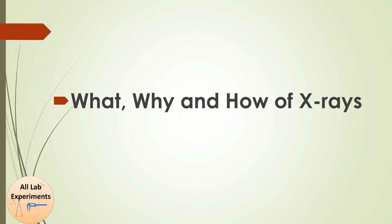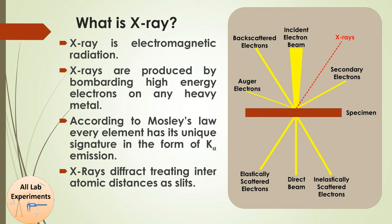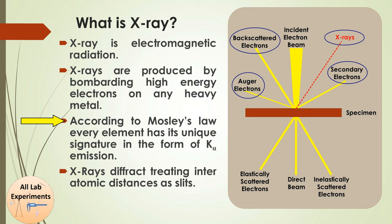Here we start with the what, why, and how of X-rays. What is an X-ray? X-ray is the same as visible light — it is electromagnetic radiation. Here is a diagram in which we can see that when an incident electron beam falls on a material, we observe back-scattered electrons, Auger electrons, and secondary electrons. We also observe X-rays, and each material according to its mass number emits a characteristic X-ray radiation.